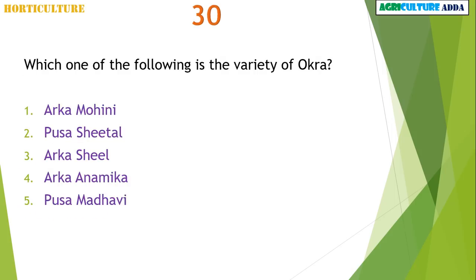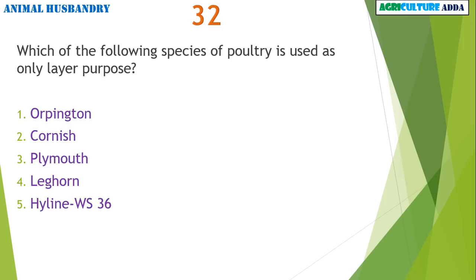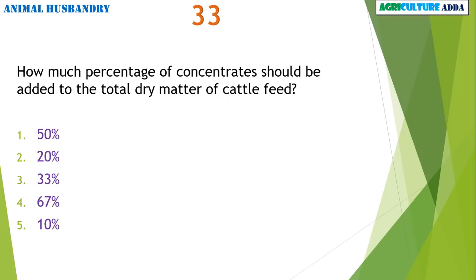Which of the following nutrient deficiency symptoms appear at the tips of shoots and roots? Calcium. Which one of the following is the variety of okra? Arka Anamika. What is the time required for pasteurization at 72 degrees Celsius? 15 seconds. Which species of poultry is used only for layer purpose? Leghorn.